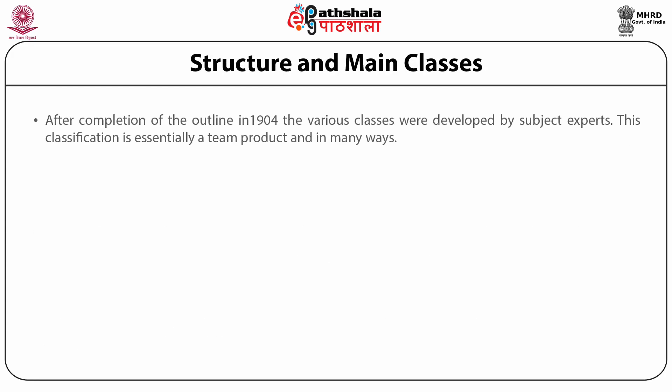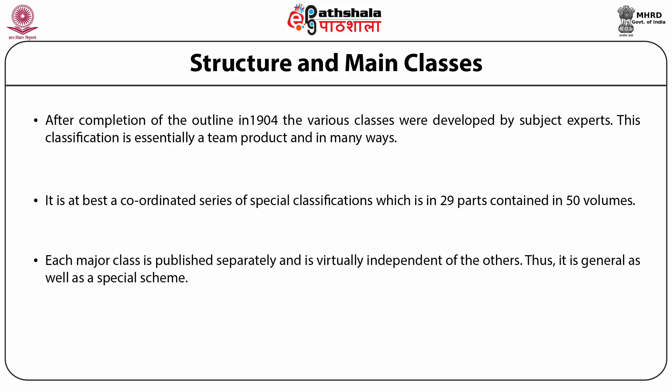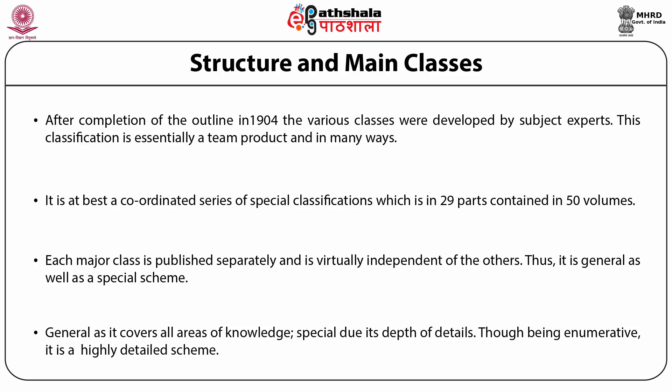Structure of the main class: After completion of the outline in 1904, the various classes were developed by subject experts working in the Library of Congress. This classification is essentially a team product in many ways. It is at best a coordinated series of special classification, which is in 29 parts contained in about 50 volumes. Each major class is published separately and is virtually independent of others. Thus, it is a general as well as a special classification scheme — general as it covers all the areas of knowledge, special due to its depth of details. Though being enumerative, it is a highly detailed scheme and very useful for research libraries.